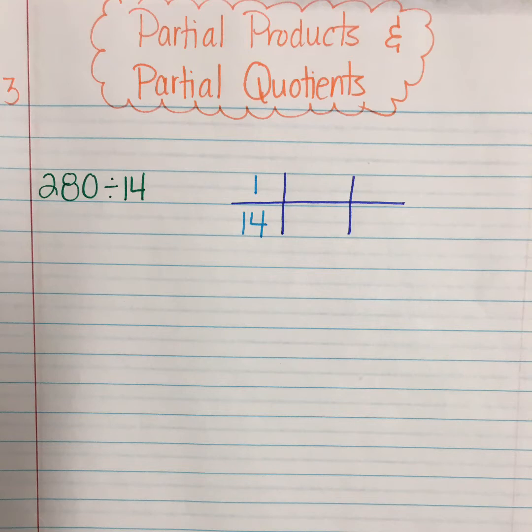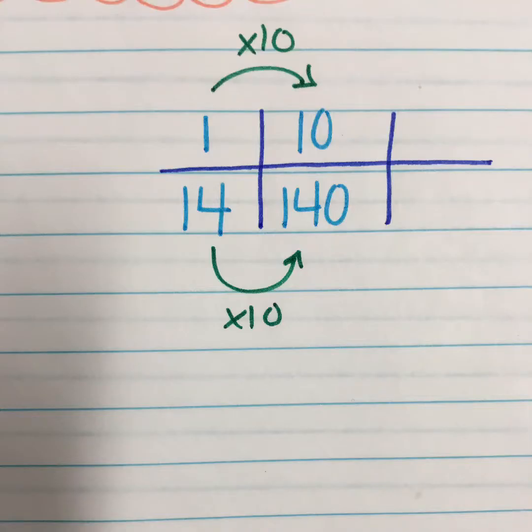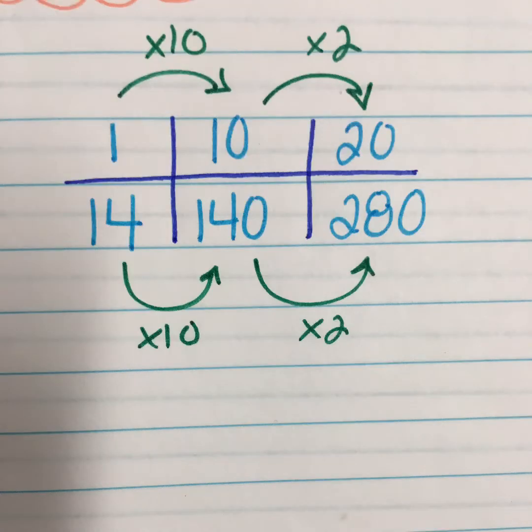So I'm working with 1 and 14 and although I'm dividing, this ratio table is going to help me figure out what I can multiply by 14 to get me to 280. So the first thing I'm thinking is this. Friendly number 10. If I multiply 1 by 10 and 14 by 10, I have 140. Then if I double 10 and double 140 or multiply both of those by 2, I end up with 280. That's what I'm looking for.